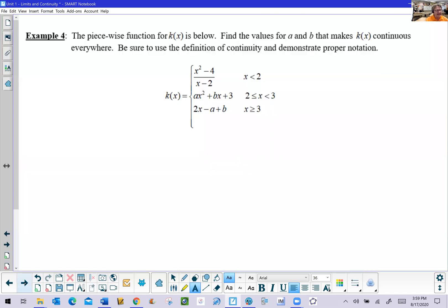So the problem reads like this: we've got this piecewise function k of x, and we want to find these values a and b so that k of x will be continuous, and we want to make sure that we use very good proper notation throughout. We want to make sure that we communicate well, and we see that our piecewise function does consist of three pieces.